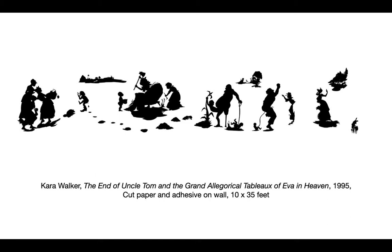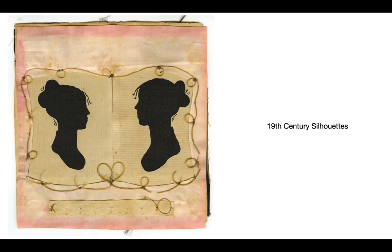This doesn't just mean racialized black. I want you to look closely at this image and think about what you're seeing, because these are often very shocking and rather controversial images. Just to give you a sense if you're unfamiliar with the silhouette form — this is an example of a 19th century silhouette. This kind of silhouette portraiture was popular in the 18th and 19th centuries, and these were often private images kept in the home.